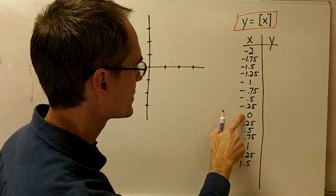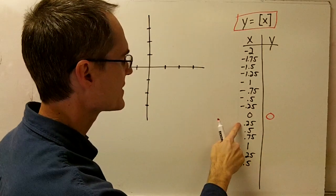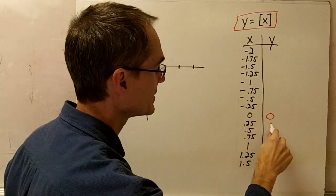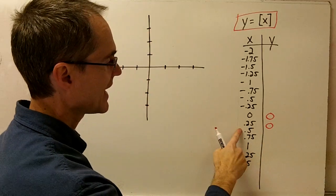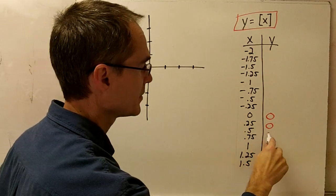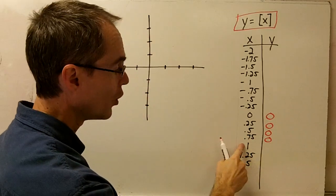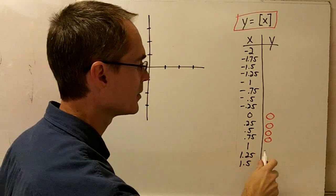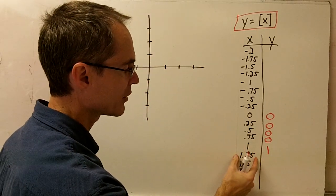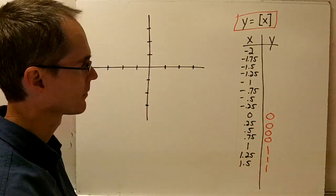For x equals 0, the greatest integer is just 0. If x equals 0.25, the closest integer without going over is again 0. For x equals 0.5, that's also 0. For x equals 0.75, still 0. At x equals 1, the greatest integer becomes 1. For x equals 1.25, the greatest integer without going over 1.25 is 1. For x equals 1.5, again it's 1.